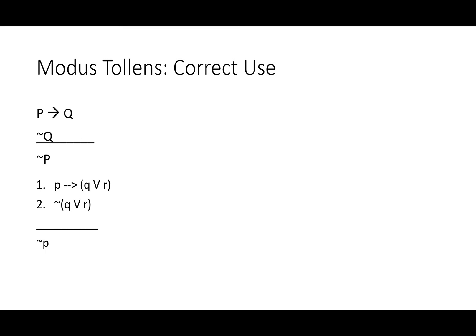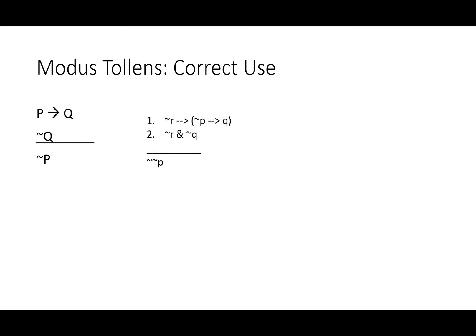How about a modus tollens example: if P then (either Q or R), neither Q nor R, therefore not P? This is going to be very easy because the consequent of the conditional in line one is already negated in line two. All we need is modus tollens.